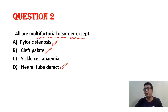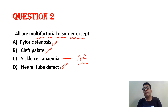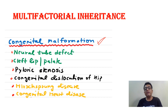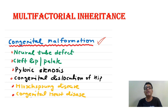Sickle cell anemia is not multifactorial. The inheritance of sickle cell anemia is autosomal recessive. The key point: remember multifactorial disorder names. In congenital — pyloric stenosis, cleft lip, neural tube defect, congenital dislocation of hip, Hirschsprung disease. In adults — coronary artery disease, hypertension, diabetes, rheumatoid arthritis, schizophrenia, multiple sclerosis, asthma, epilepsy.